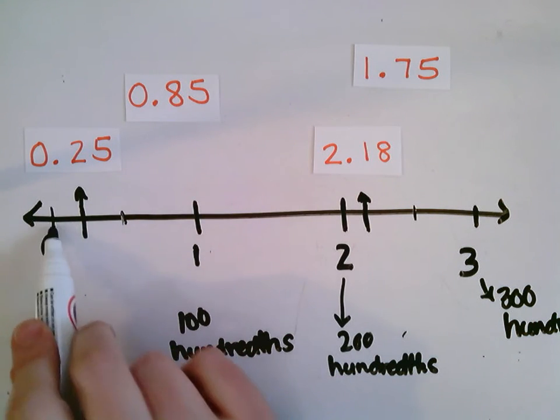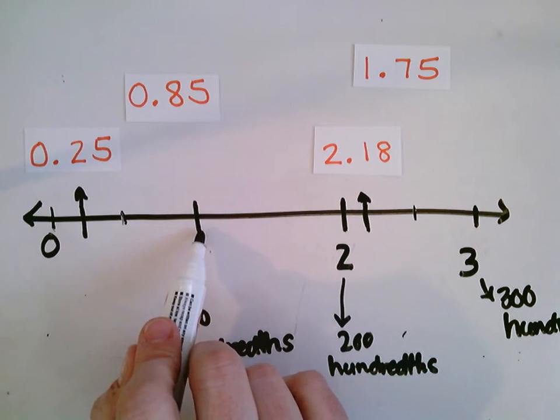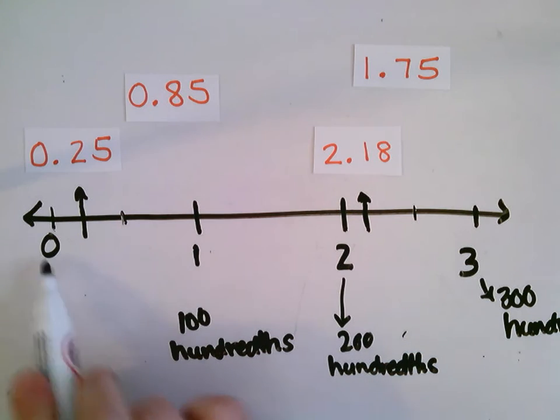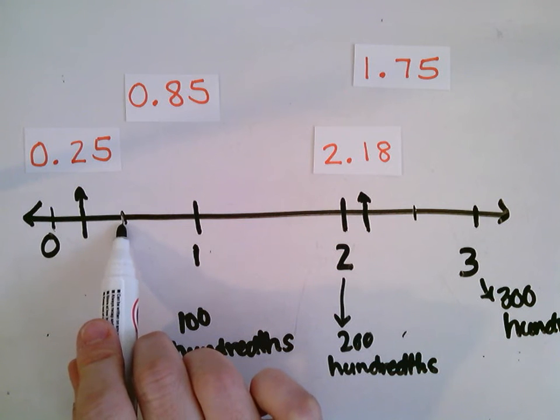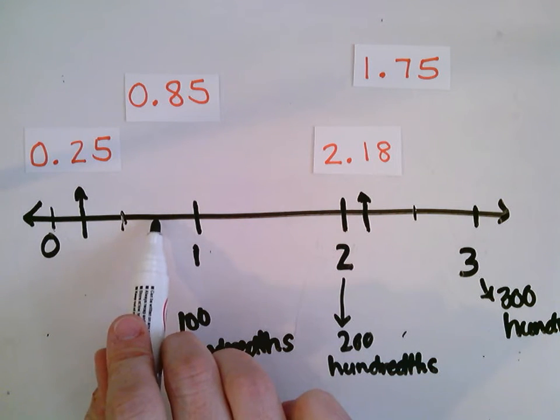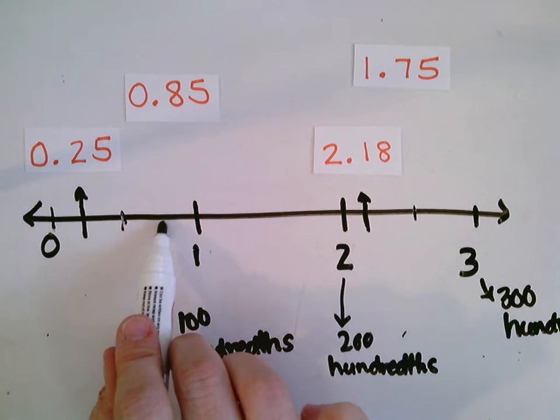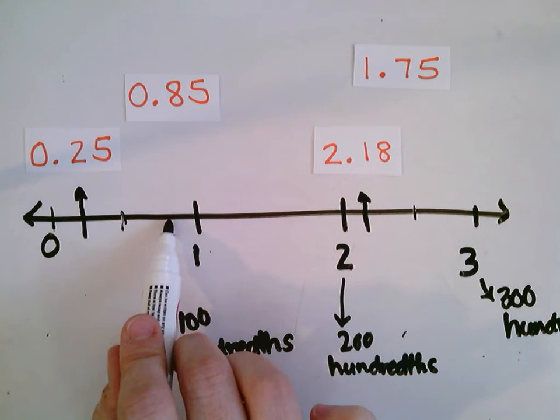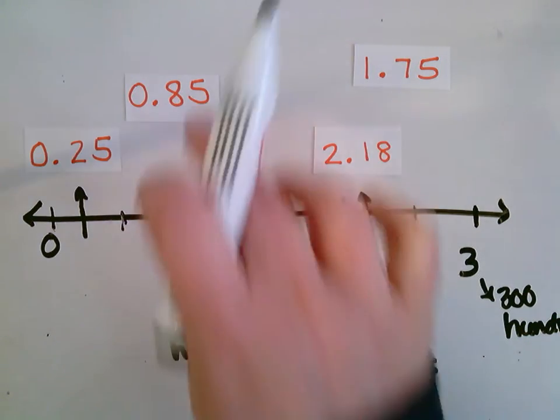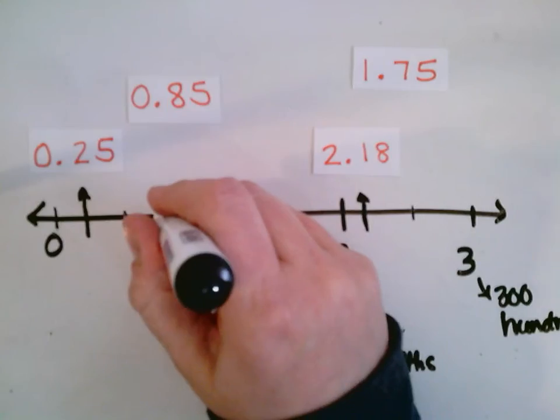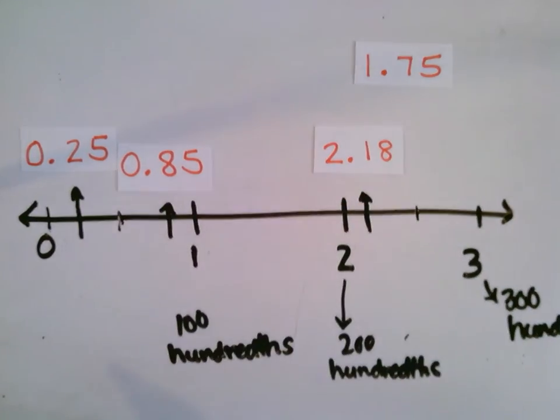So I'm going to think about this. Halfway between 0 and 1, thinking about same as halfway between 0 and 100 would be 50, right? So this would be 50 hundredths. I know that 85 is greater than 50 hundredths and it's probably a little closer to 1 than it would be to 50. So I'm going to put my 85 hundredths right about here on my number line.